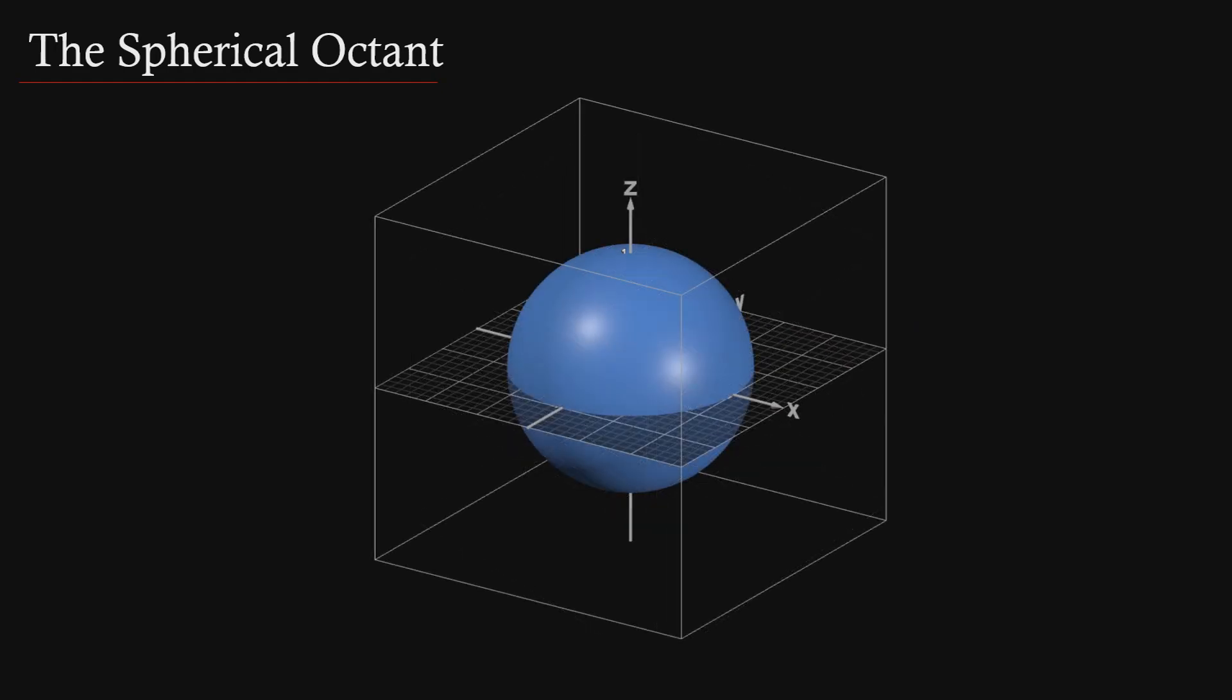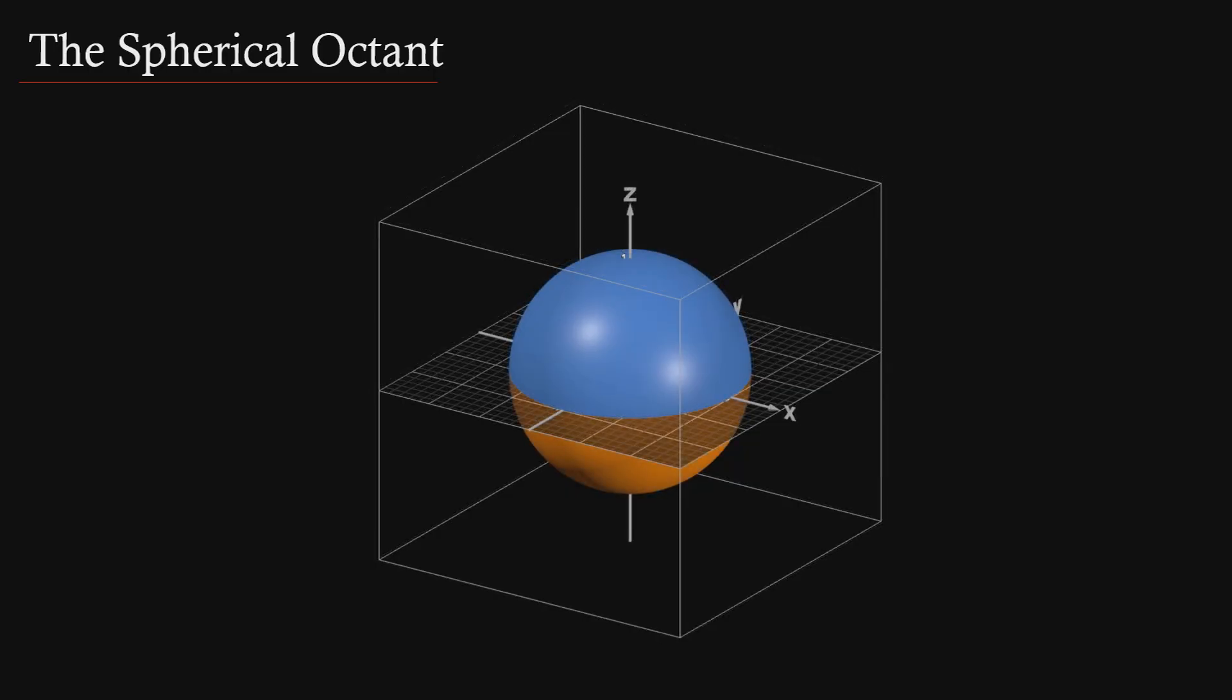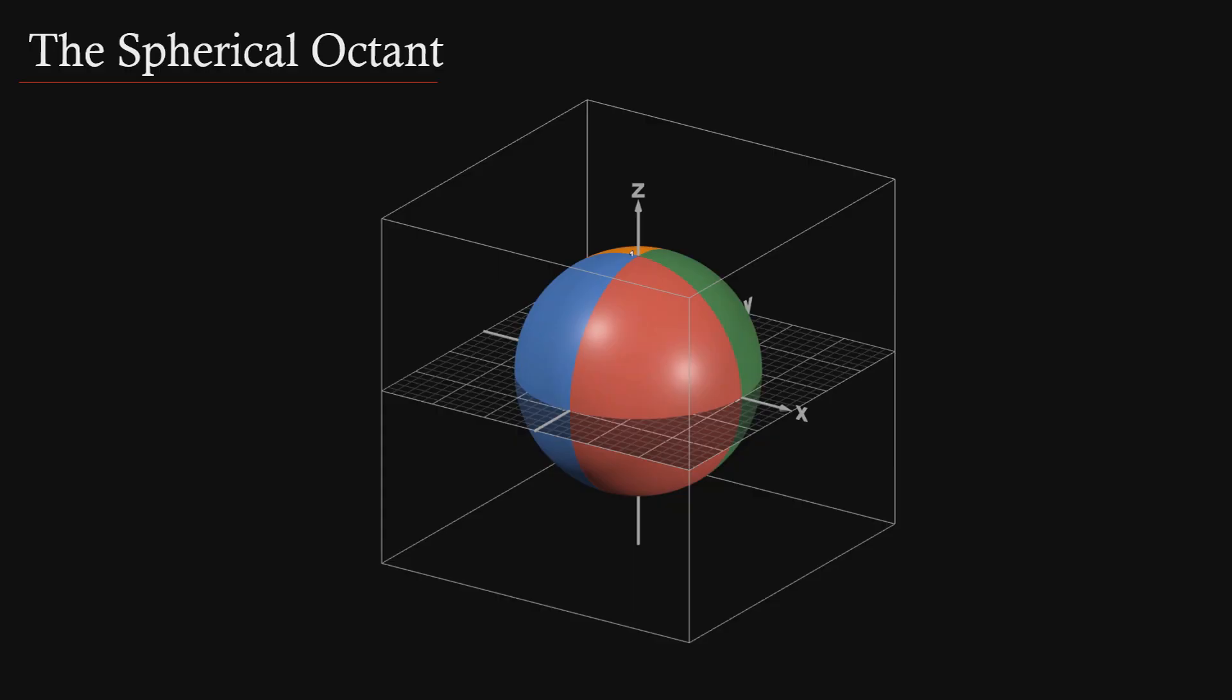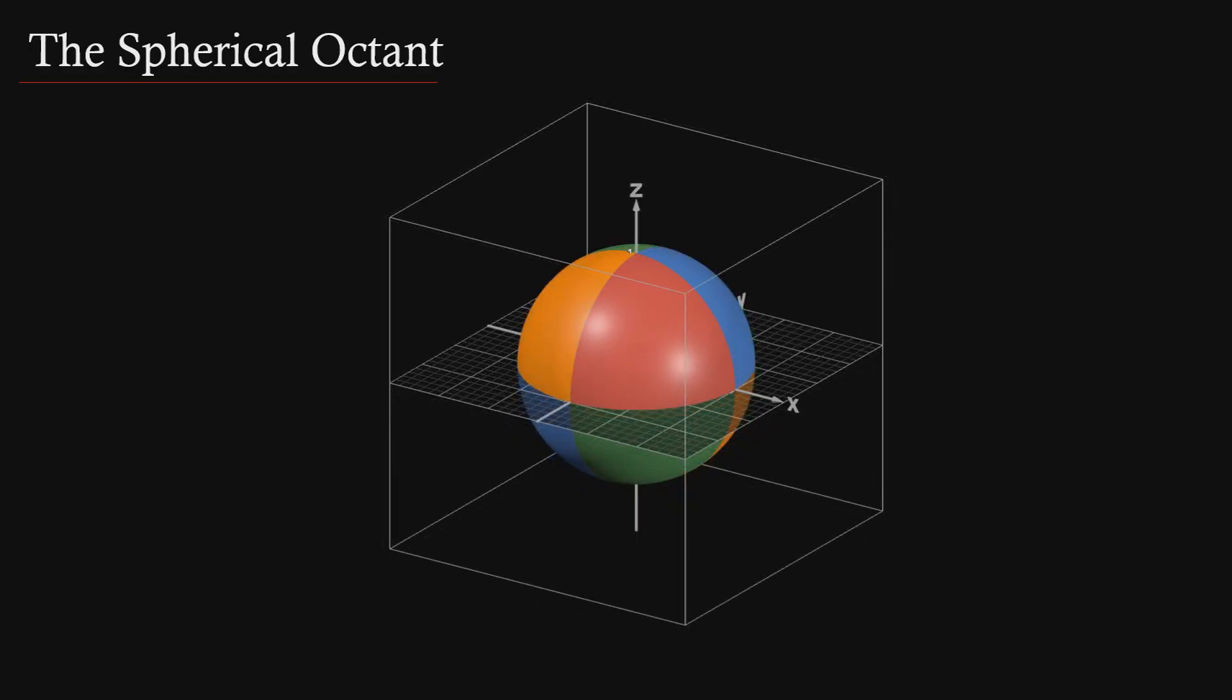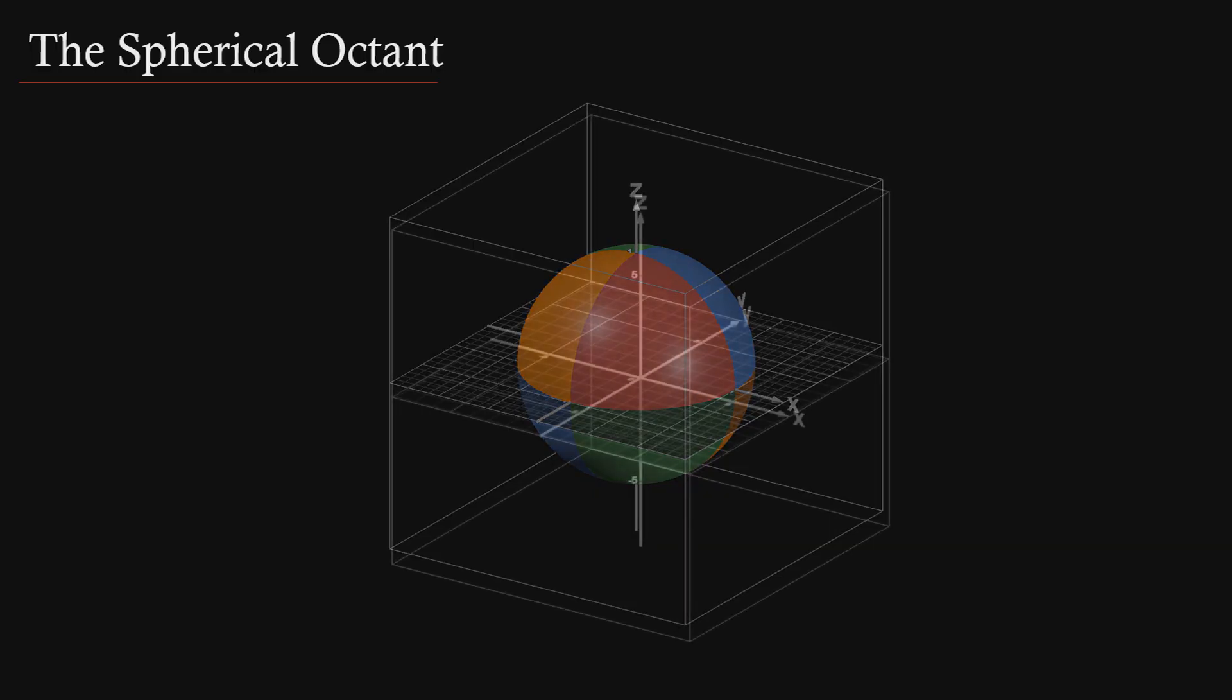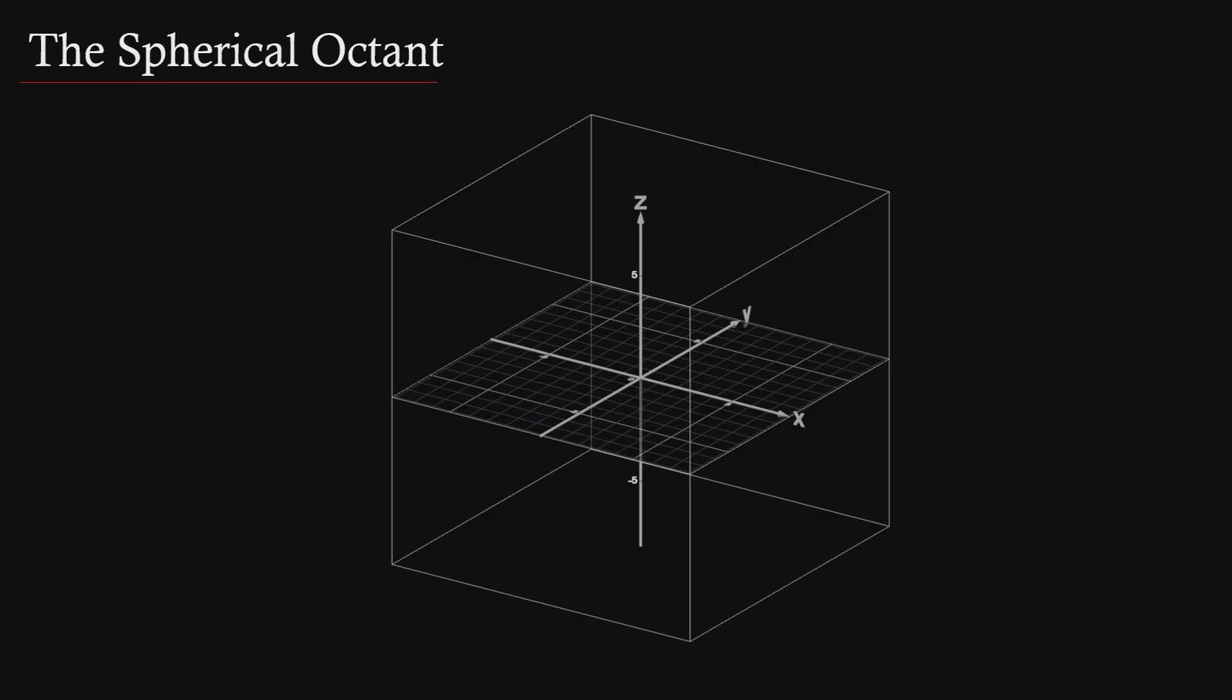Starting with the sphere, we can cut it in half by slicing it down any axis. We now have two hemispheres. We can then slice each hemisphere by either of the remaining two axes and get four wedges. And lastly, we can slice each of the four wedges in half by the remaining axis to get eight octants. If we remove all eight octants, we can show that each of the x, y, and z axes are calibrated with both positive and negative numbers.